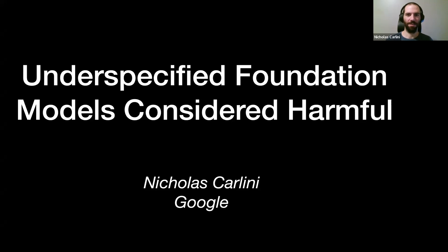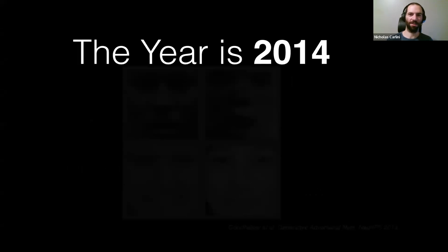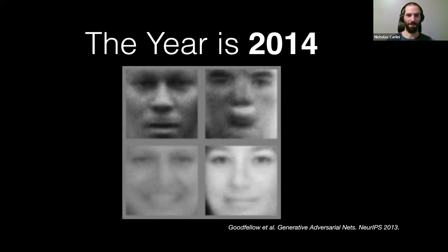Let's get started. A couple of years ago, if someone told you they had an algorithm to generate synthetic images, they might show you images like these: 64 by 64 grayscale images that, if you squint, look a little bit like human faces. This is from the state-of-the-art paper by Ian Goodfellow and others on GANs, which revolutionized part of the field. But these images looked quite terrible in retrospect.